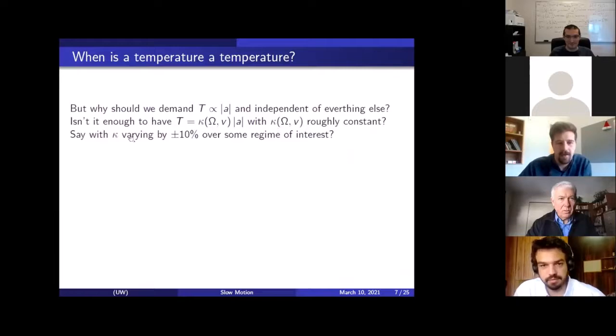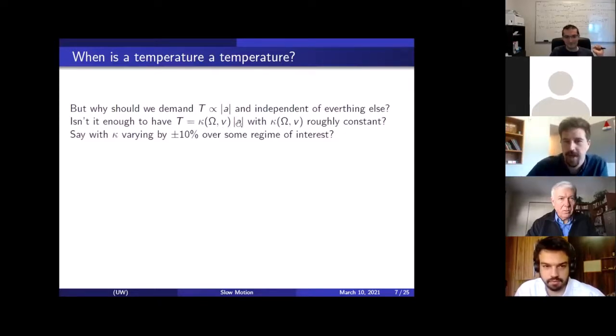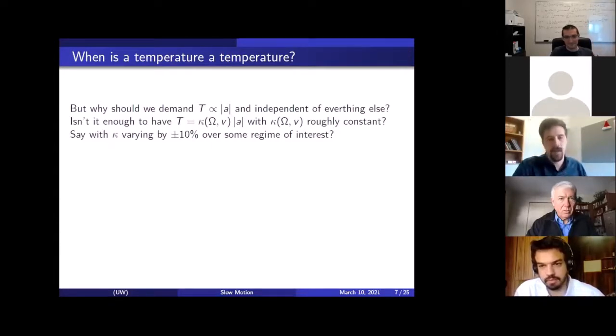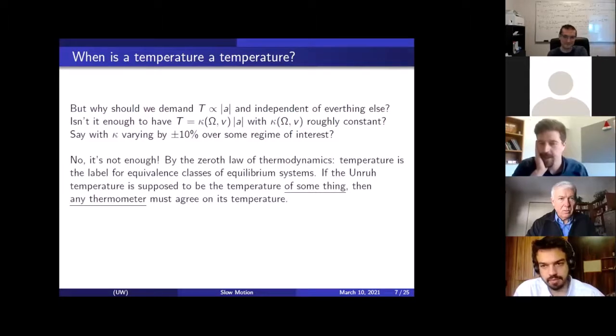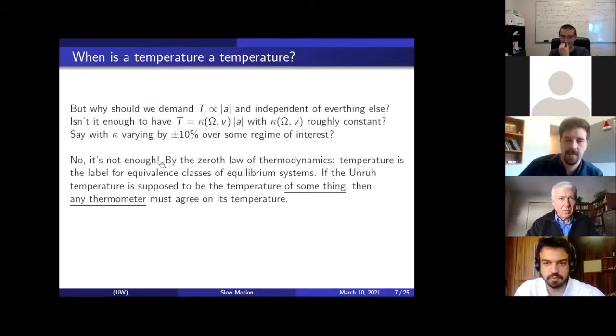And to answer Rob's question, or to restate Rob's question, when can we trust our thermometers? Can we trust thermometers that depend on these other factors? I think there's a very clear reason why we can't. When is a temperature a temperature? So you may ask, you may be skeptical of what I'm saying and say, but why should we demand T proportional to A, and that it's independent of everything else? Isn't it enough to have temperature proportional to A with some proportionality constant, and with that proportionality constant roughly constant, with say varying by 10, plus or minus 10 percent over some regime of interest? You might think that that's good enough, and that these can be goodish thermometers, and they can tell us something about what's going on.